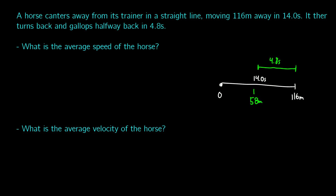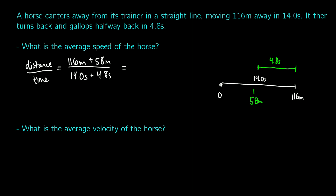What is the average speed of the horse? For average speed, we take the total distance traveled divided by the time. First we're going 116 meters, and then another 58 meters. We divide by the time: 14 seconds plus 4.8 seconds. So our average speed is 116 plus 58 meters — that's 174 meters — divided by 18.8 seconds. With a calculator that gives a number with three significant digits in meters per second, but this is more about the concepts.